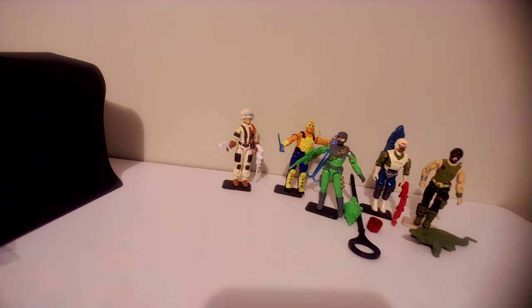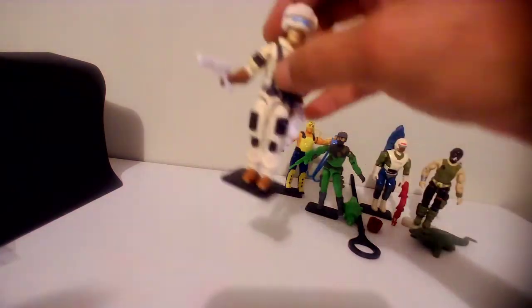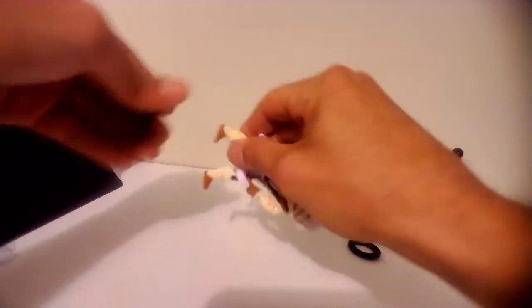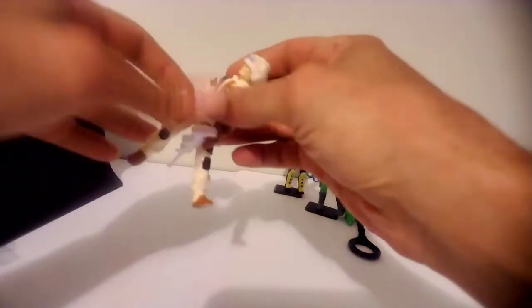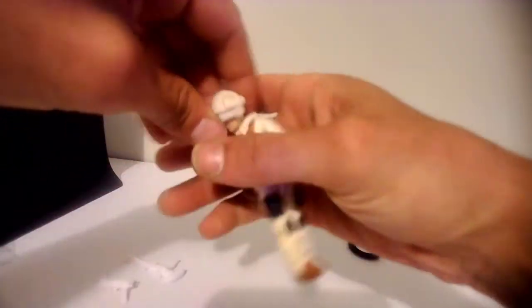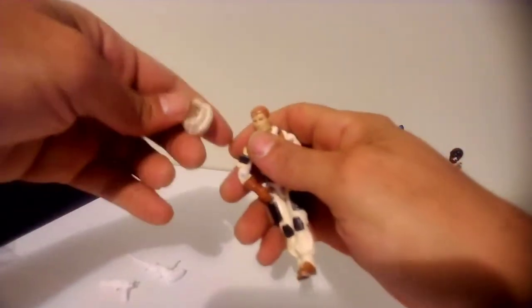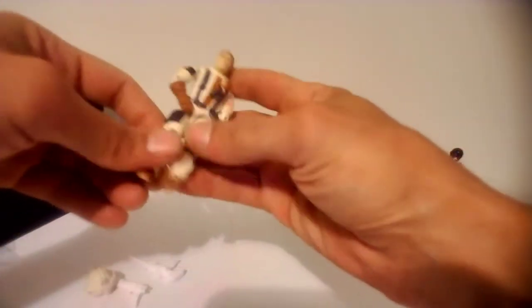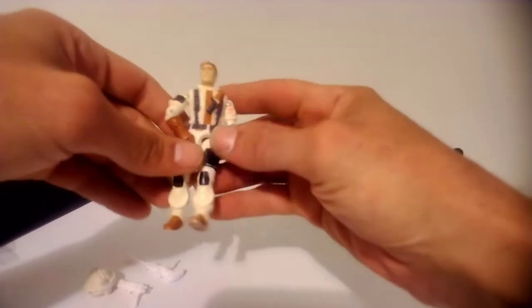Next we're going to go to Blizzard, really cool figure. Blizzard as you can tell is a little loose. He will come with a stand. He comes with his accessories, two guns, and the helmet does come off. A little bit of paint wear in the hair.